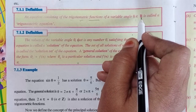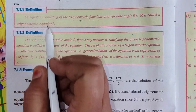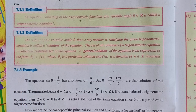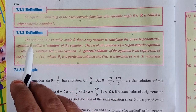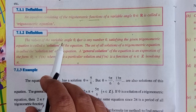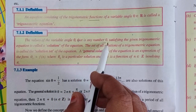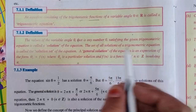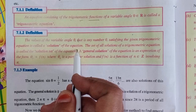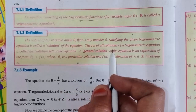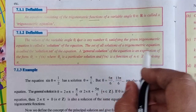Next, the solution: the values of the variable angle theta — that is, any number theta satisfying the given trigonometric equation — is called a solution of the equation. The set of all solutions of a trigonometric equation is called the solution set of the equation.